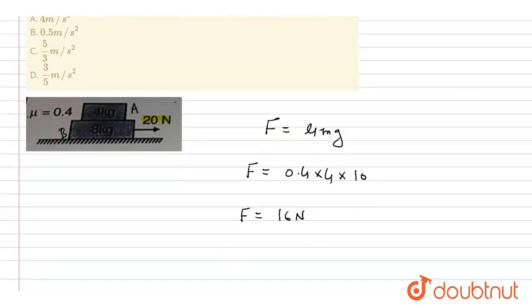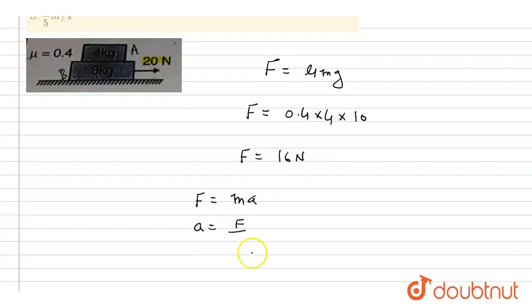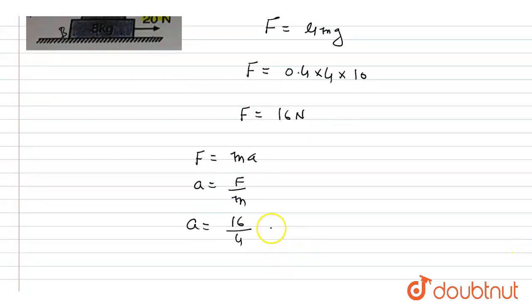The maximum acceleration for the 4 kg block: as we know F is equal to ma, then a is equal to F by m. So here, the acceleration for the 4 kg block is the value of F, which is 16 newton, and mass is 4 kg. This will be equal to 4 meter per second square.